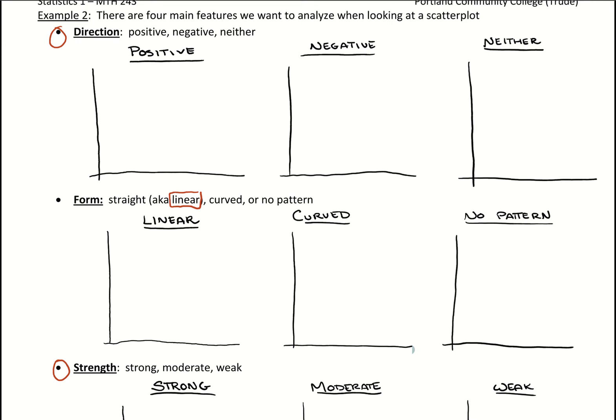So direction, there's going to be three ways that we could describe direction: positive, which for our scatterplot, what that would look like is an increasing scatterplot.